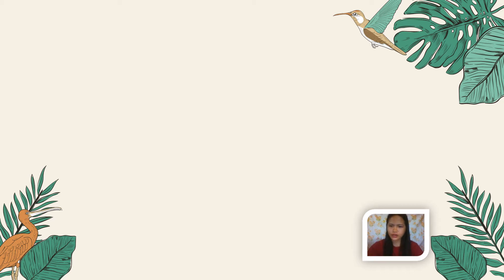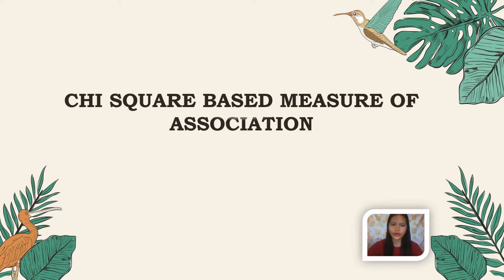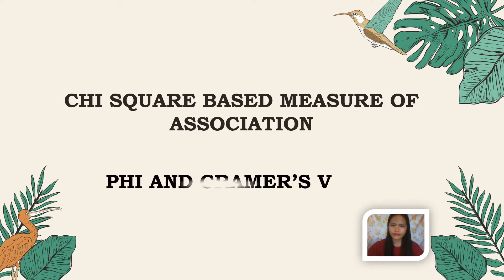Hi everyone, good morning. For today's lesson, we will tackle the chi-square-based measures of association, which are the phi and Cramér's V.